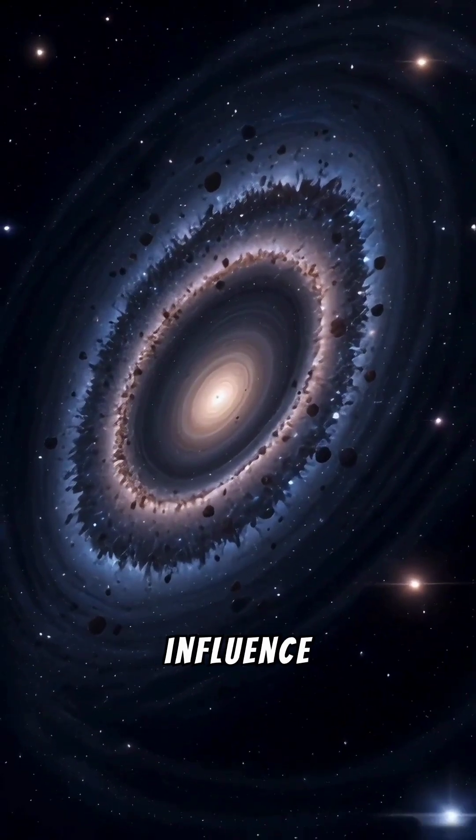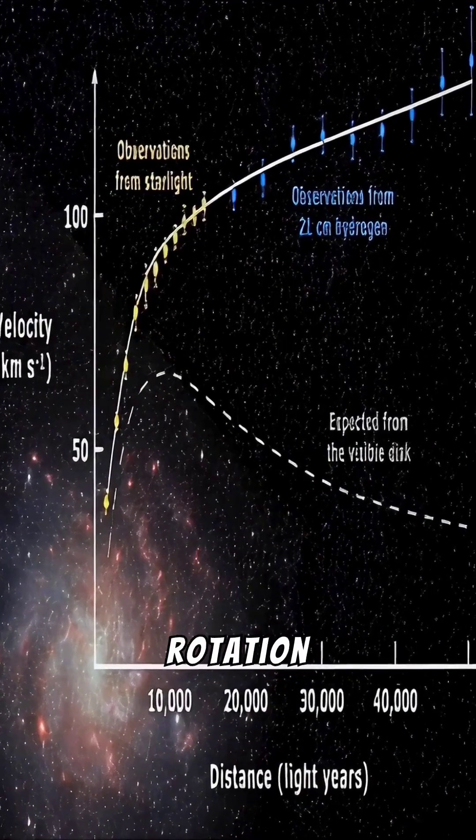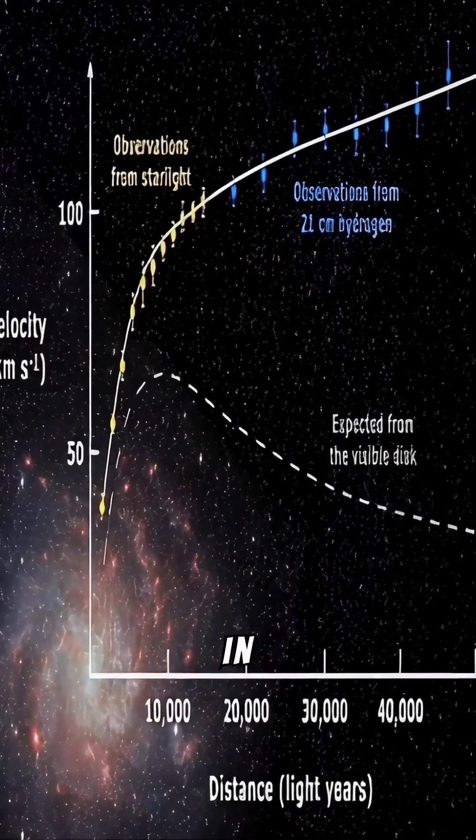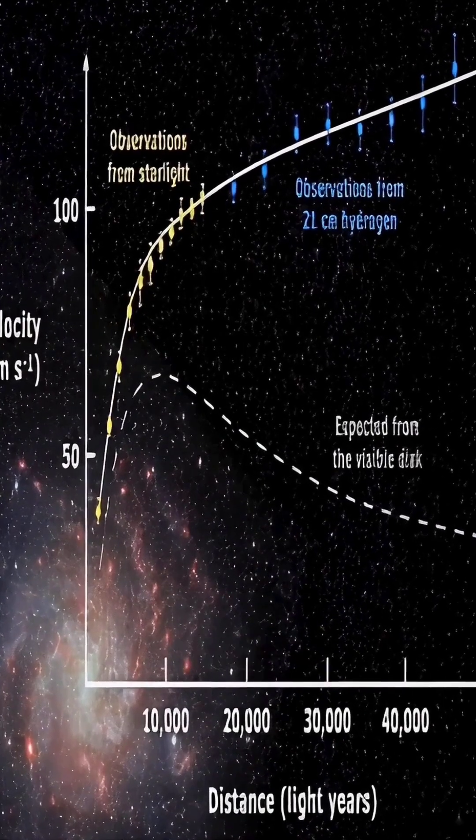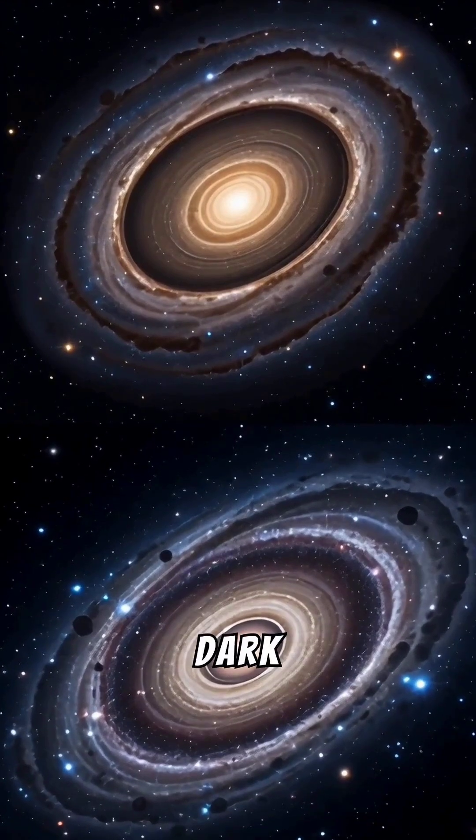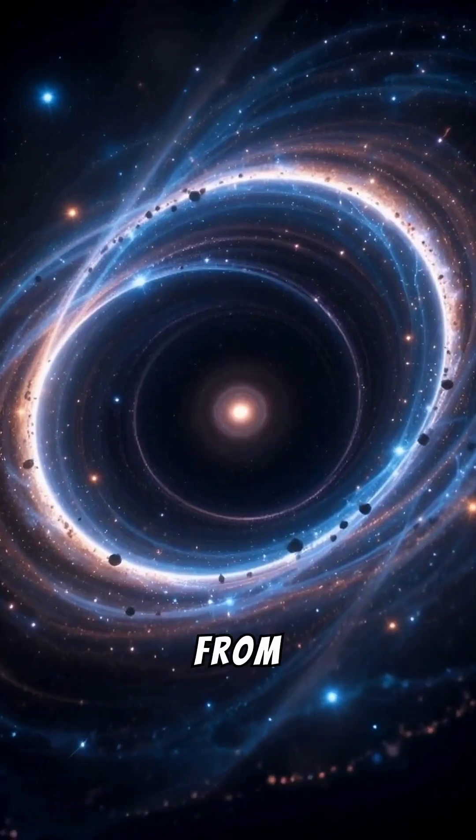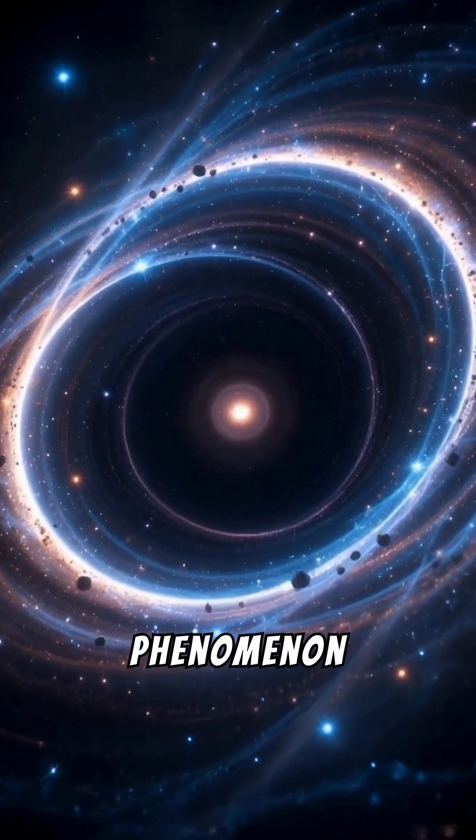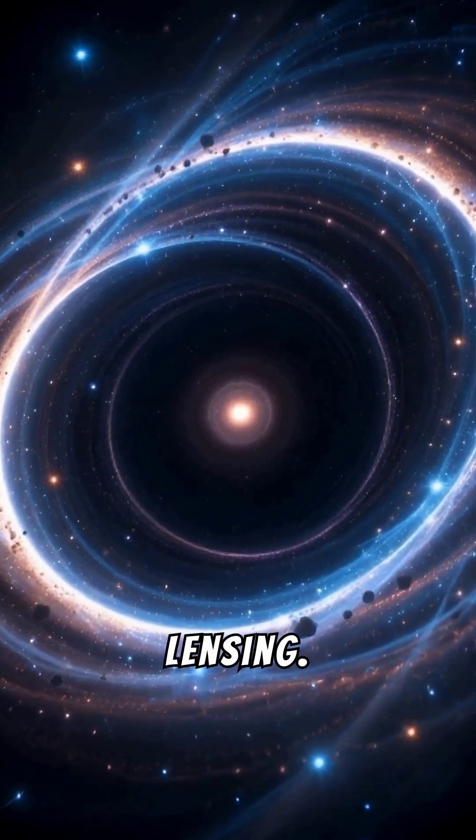Its influence manifests itself in the rotation speed of galaxies. Stars in the outskirts spin much faster than they would if influenced only by visible matter. Furthermore, dark matter bends the path of light coming from distant objects, a phenomenon known as gravitational lensing.